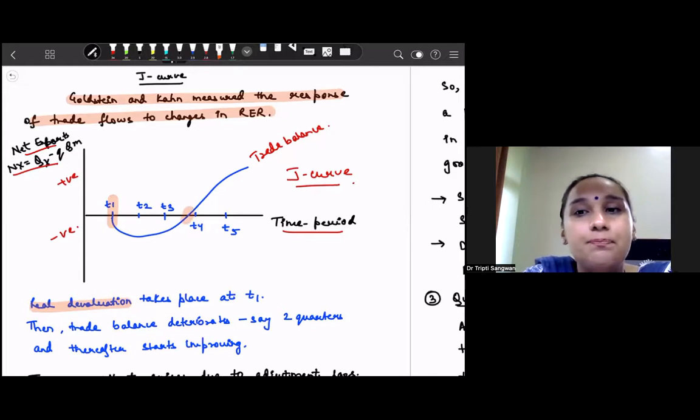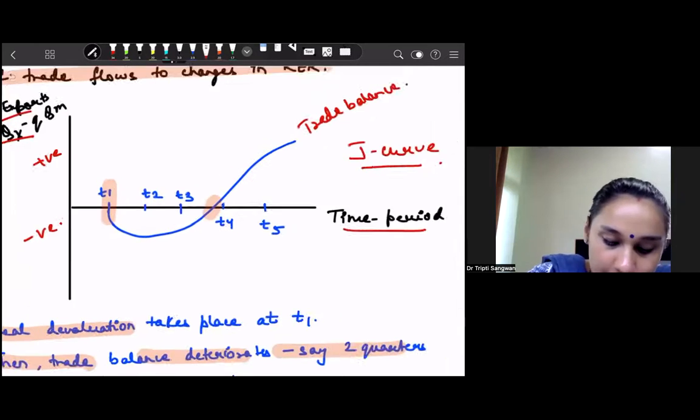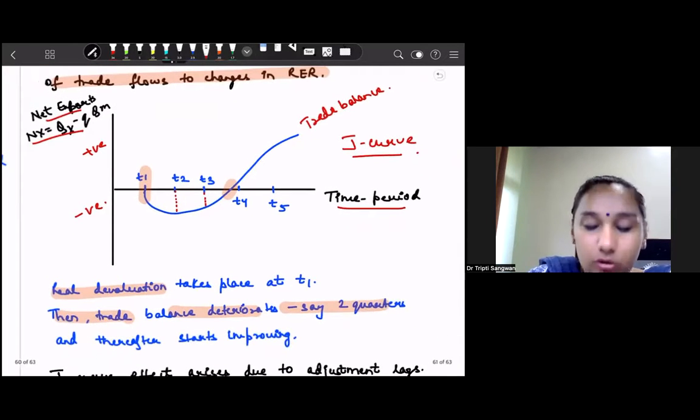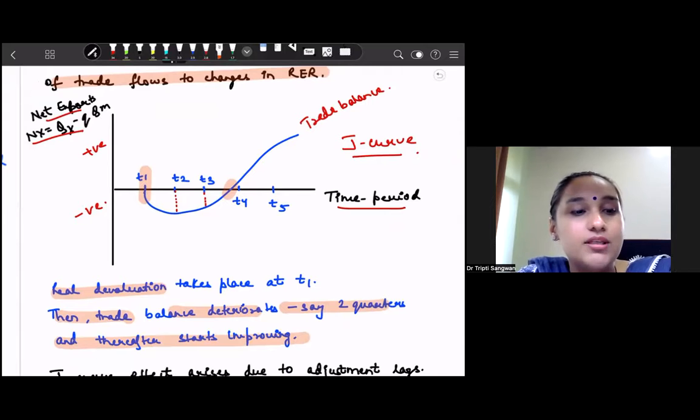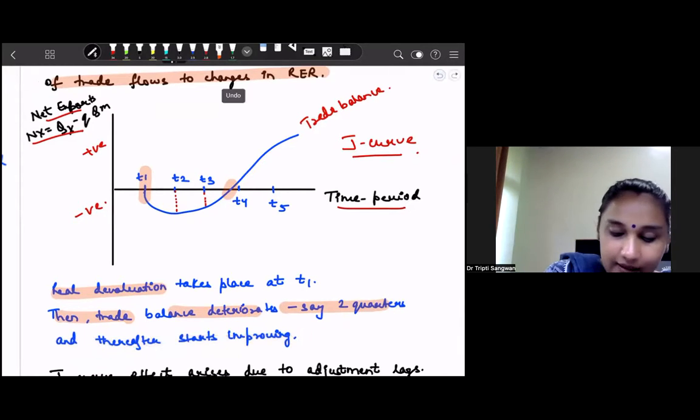So the real devaluation that takes place at time period day one, but you can see that the trade balance starts increasing towards T4, that is time period four. Then trade balance deteriorates for two quarters, as you can see here that it deteriorated here and also here. After that, our trade balance improves and starts improving. Now this is as per the empirical study that these two economists have conducted. It is not necessary that in one time period, after two quarters it will improve. This is applicable for all countries or for one country in all time periods, because it depends upon the economic scenarios.